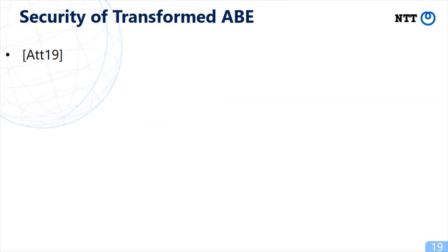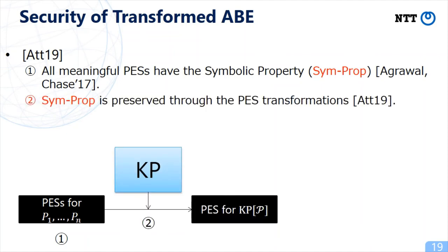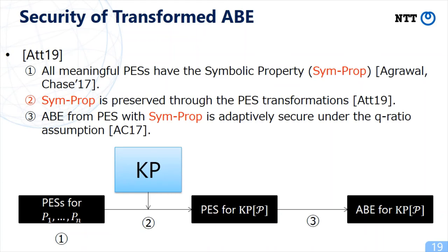The last thing we need to consider is how to prove the security of the resulting ABE schemes. In Atapadung's work, the security of his schemes is based on three facts. The first is that Attrapadung and Chase showed that all meaningful pair encoding schemes have the symbolic property. The second is that the symbolic property is preserved through the three transformations, so the pair encoding scheme for KP of P has a symbolic property.